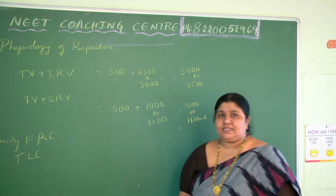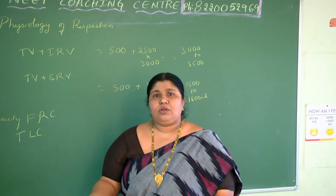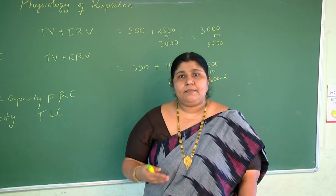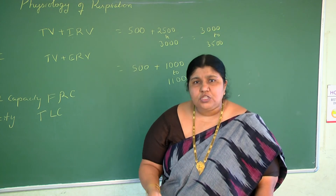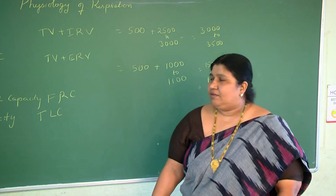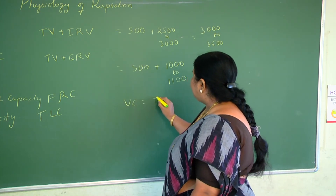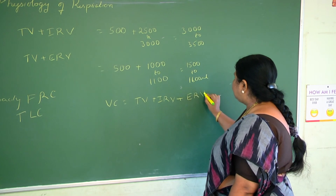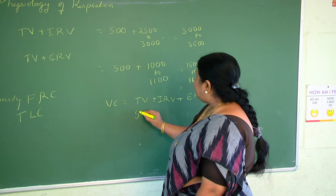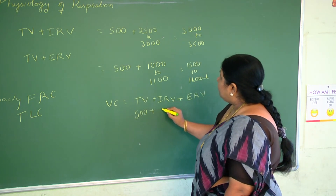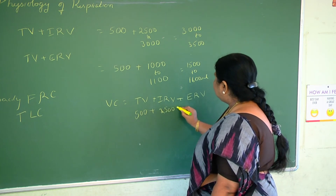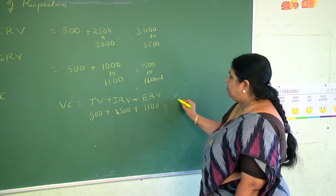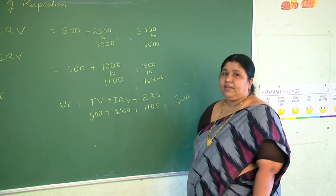Then what is vital capacity? Vital capacity is the total amount of air a person inhales after forceful exhalation, or the total amount of air a person exhales after forceful inspiration — that is called vital capacity. We get it by summing TV plus IRV plus ERV. Taking 500 plus 2,500 plus 1,100, we get approximately 4,100 to 4,600 ml as the vital capacity.